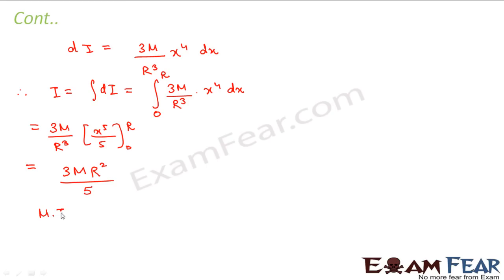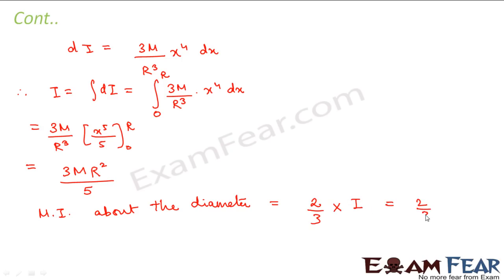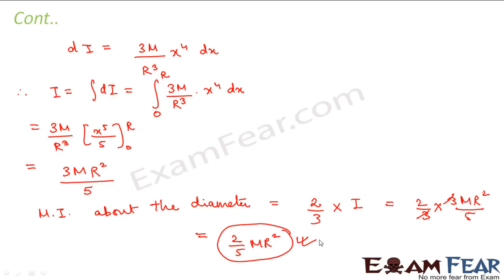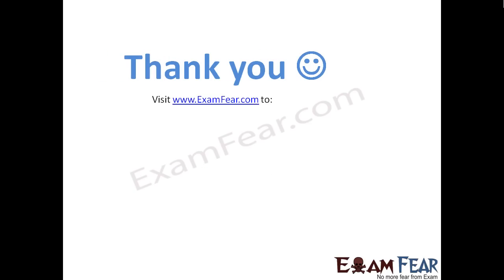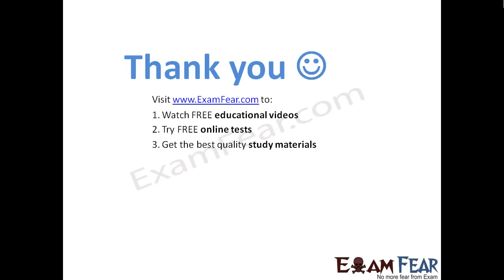Now we calculate the moment of inertia about the diameter. The moment of inertia about one diameter equals two-thirds of the total moment of inertia. So this equals (2/3) × (3MR²/5). The 3s cancel, giving 2/5 MR². This is the moment of inertia of a solid sphere. Thank you — please visit examfew.com to watch free educational videos, try free online tests, and get the best quality study materials.